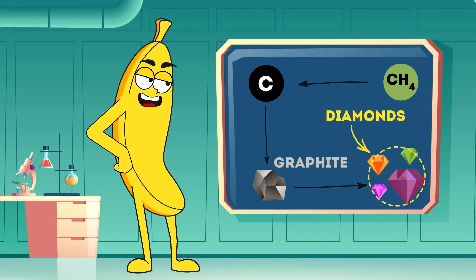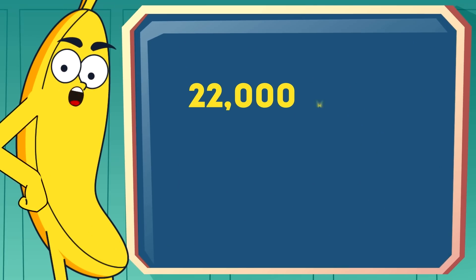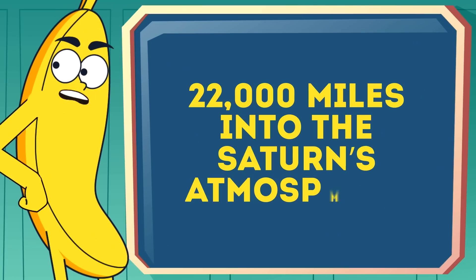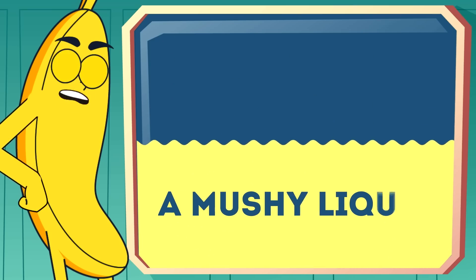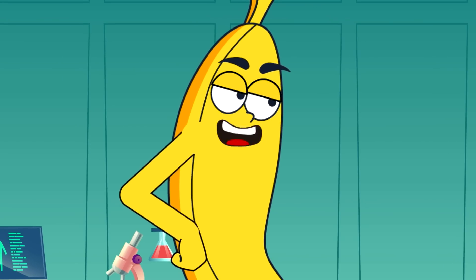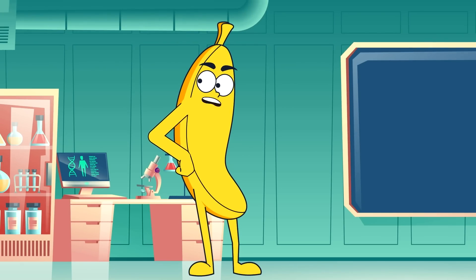However, you need significant pressure to do that. But about 22,000 miles into Saturn's atmosphere, temperature rises and the diamonds decompose into a mushy liquid. According to the NASA Jet Propulsion Laboratory, such diamonds would be about a centimeter in diameter. Enough for a ring, anyway.